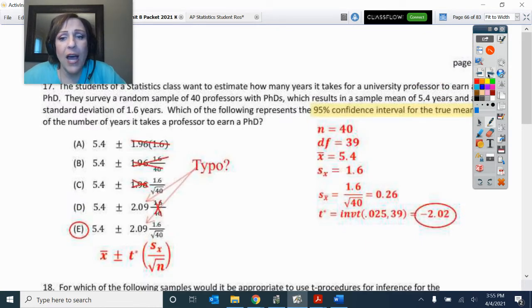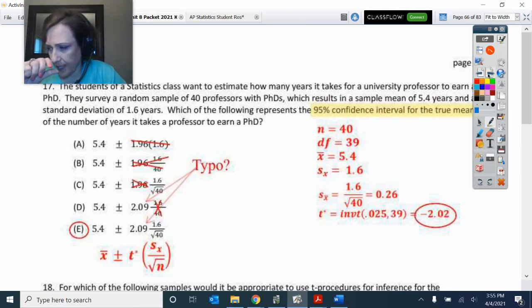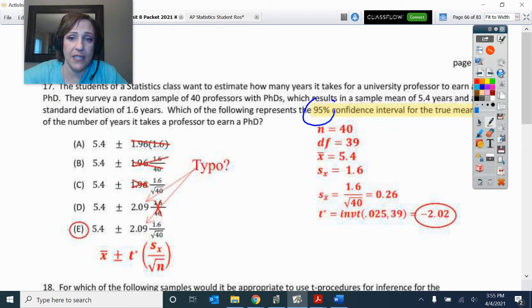Number 17. I thought maybe there was a typo. Maybe I had written that wrong. So I'll have to go back in and fix that. But for one, and I saw this happen on the quiz that we've just had, where you guys see this 95% confidence and you're going, oh, it's 1.96. No, that is not correct.